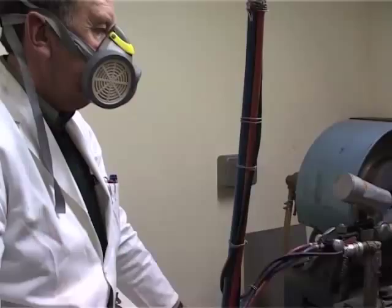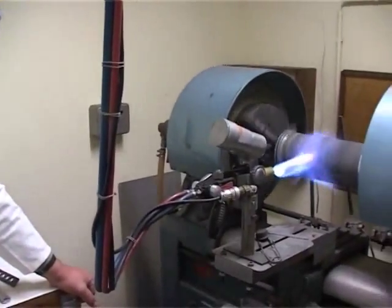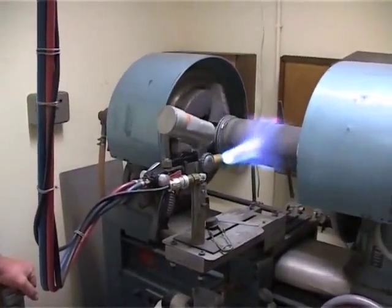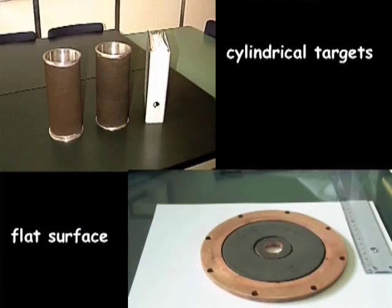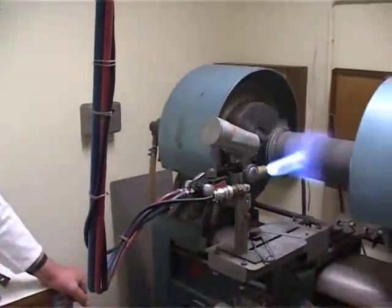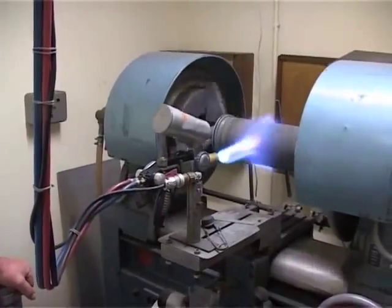Rotatable magnetron sputtering technique versus the use of planar targets offers large benefits. First, we can put higher power into the magnetron, giving a higher deposition speed. There is also better material usage — with a planar target you can only use about 30% of the material before it's finished, whereas with a rotatable magnetron we can go up to 90% of the material.